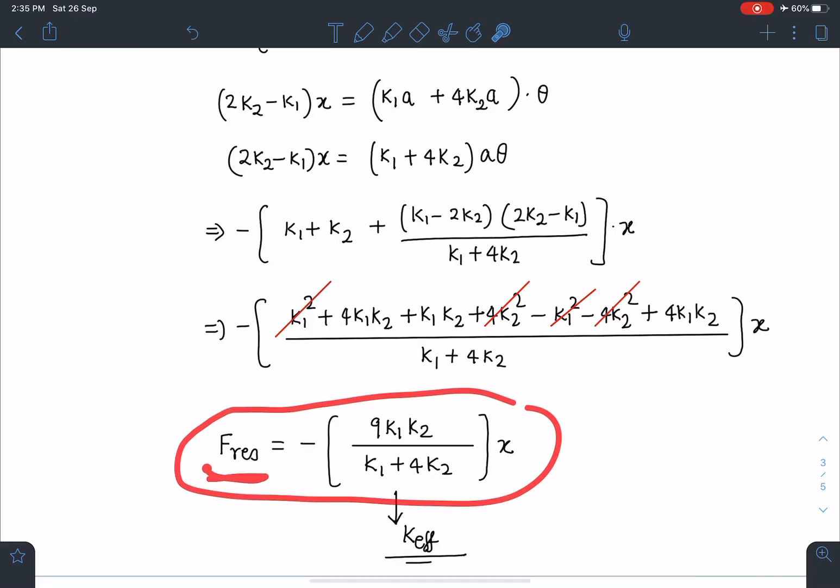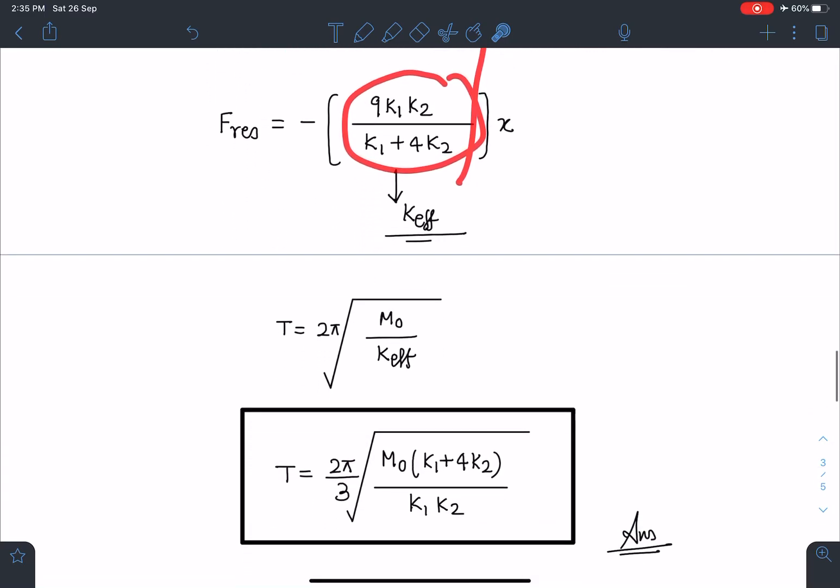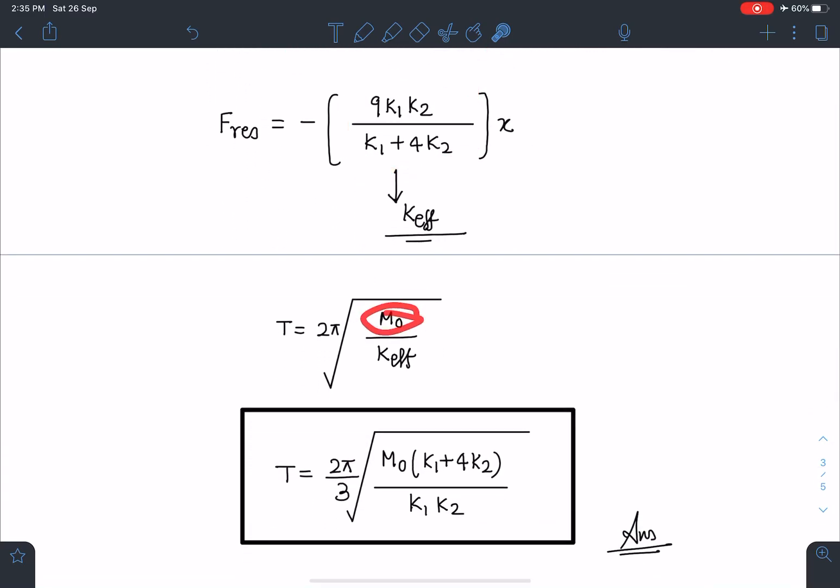All right, I can write it as m·d²x/dt² = -k_eff·x. That is all fine. So this is the effective k. Now I can write the time period of this as T = 2π√(m/k_effective). When I substitute, I am getting this: 9 I'll take outside the root, so it becomes (2π/3)√[m₀(k₁ + 4k₂)/(k₁k₂)].